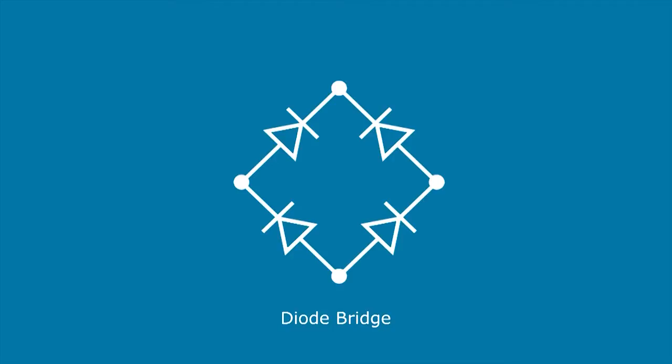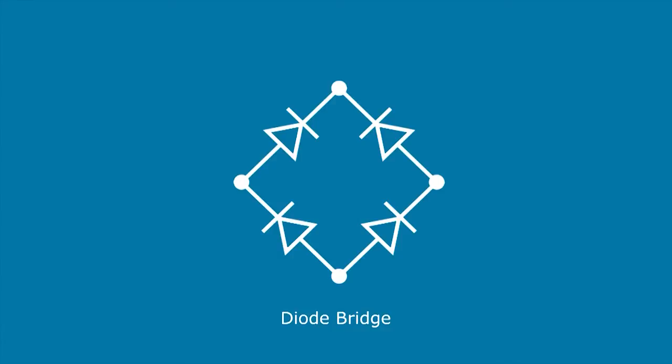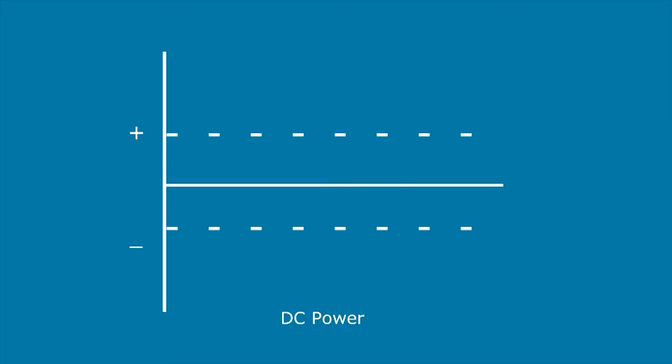a diode bridge can prevent current from flowing in an alternating direction and allow the current to flow directly to a positive direction and a negative direction. This creates two distinct direct current paths that have now changed the AC sine wave into DC.